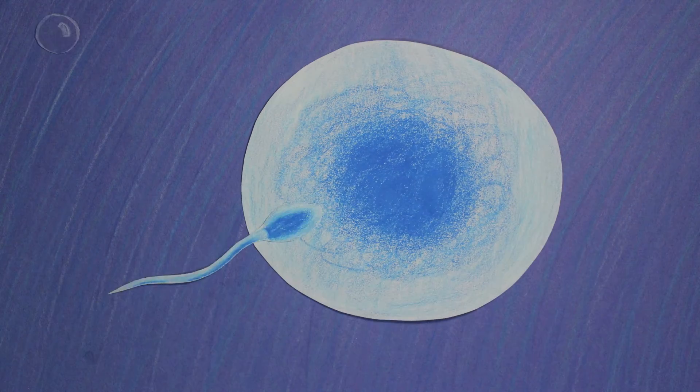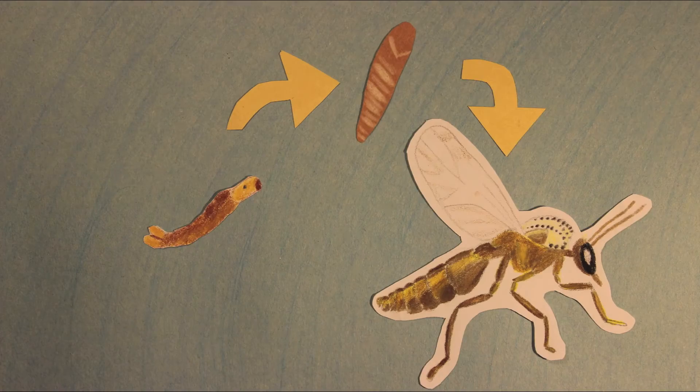Development most often starts with a fertilized egg. The young organism will grow and mature and finally become a parent of the next generation.